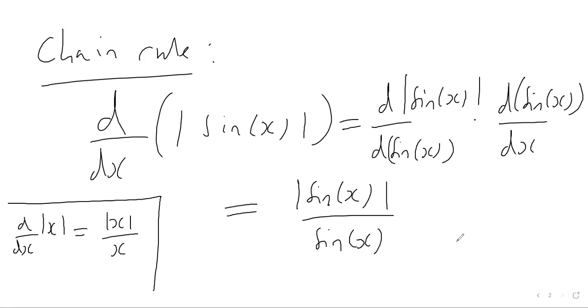We have that there. Then we multiply this by the derivative of sine x with respect to x. We know from previous videos that when we differentiate the sine function, we get the cosine function. So this is just going to be cos x.